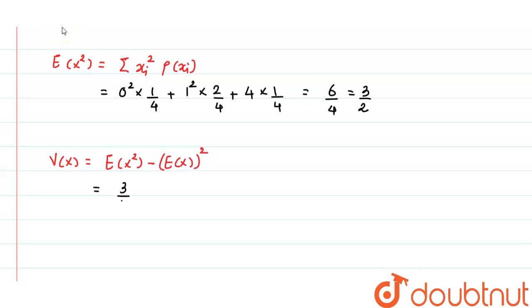So, E of X square is 3 by 2 and minus E of X is 1. 1 square is 1. So, 3 by 2 minus 1. If I take LCM and simplify this, answer will be 1 by 2 which is our variance.